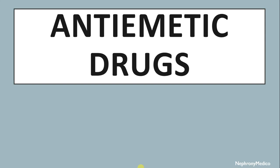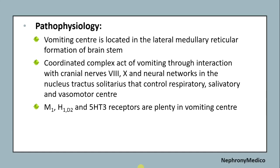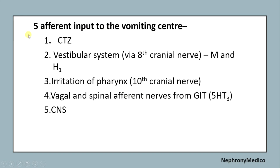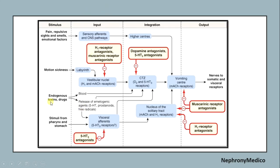Hello and welcome. Let's talk about antiemetic drugs. The vomiting center is located in the lateral medullary reticular formation of the brainstem, coordinating the complex act of vomiting through interaction with cranial nerves and neural networks in the nucleus tractus solitarius, which controls respiratory, salivatory, and vasomotor centers. M1, H1, D2, and 5-HT3 receptors are plentiful in the vomiting center. The five afferent inputs to the vomiting center include CTZ, vestibular system, irritation of the pharynx, vagal and spinal afferent nerves from the GIT, and CNS.